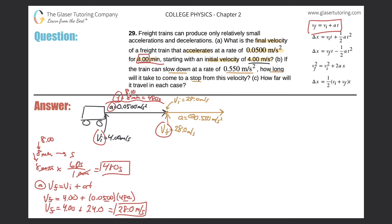It wants to know how long this is going to take — I'm looking for my time. How long will it take to finally come to a stop? At that end point, the final velocity of the gold frame is going to be 0 meters per second.